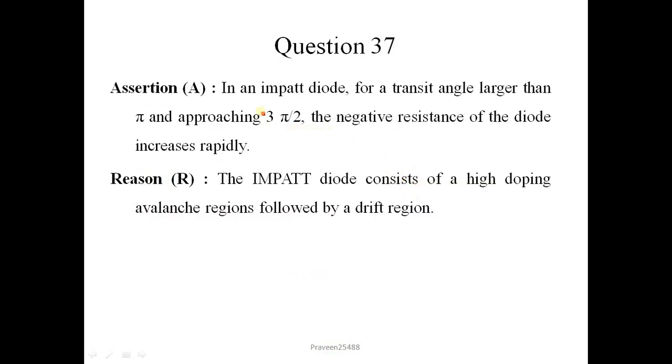Next question is. In an IMPATT diode for a transit angle larger than pi and approaching 3pi by 2, the negative resistance of the diode increases rapidly. This statement is correct. The IMPATT diode consists of a high doping avalanche region followed by a drift region. This is also correct. It is not the correct explanation of this. So correct option is 2.